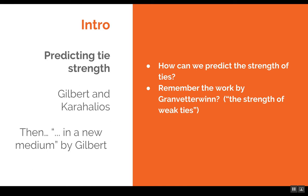Last time we talked about ties and tie strengths that exist between people in a social network. Now we have three papers in this first hour block. The first one is by Eric Gilbert and Karahalios. The second paper is also by Eric Gilbert, who basically took the result of the first paper and tried to apply it to Twitter.